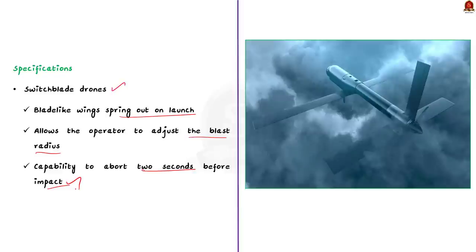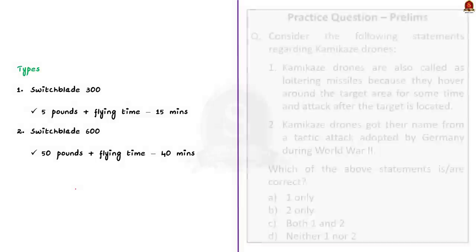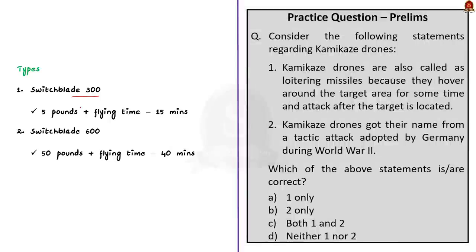According to AeroVironment, the manufacturer, these drones come in two sizes. The first is the Switchblade 300, which weighs around 5 pounds, flies up to 15 minutes, and is designed to be carried in a small backpack. The second is the Switchblade 600, which weighs about 50 pounds — ten times more than the 300 — flies up to 40 minutes, and is used to target much bigger armored vehicles.